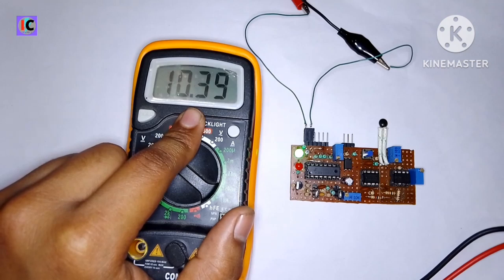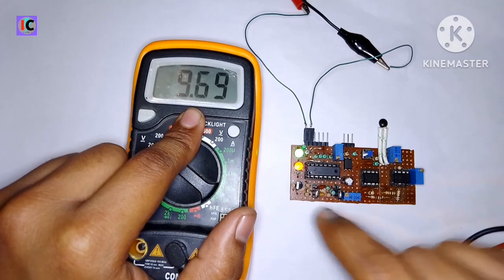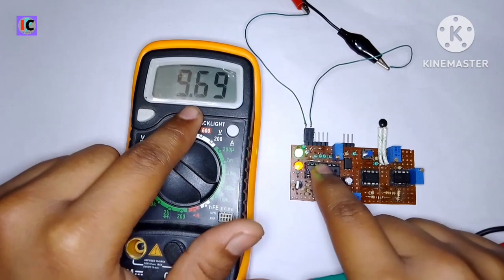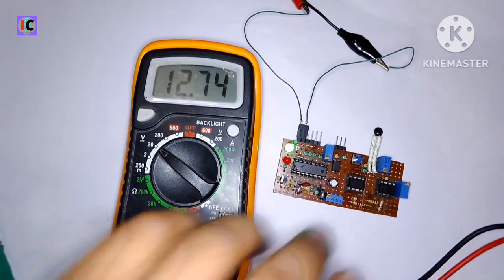Here I'm testing the low battery protection. You can see when the voltage drops below 9.7 volts, the PWM stops.